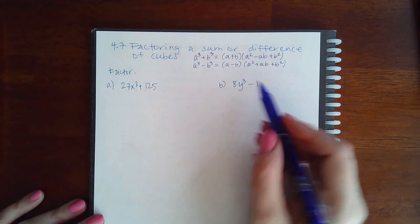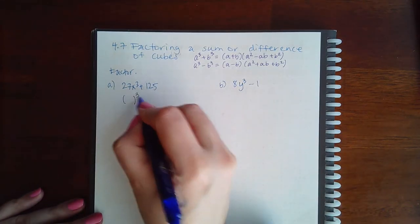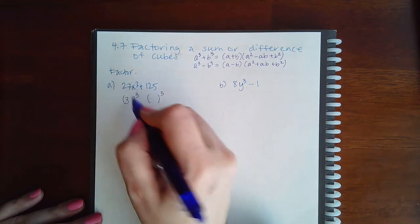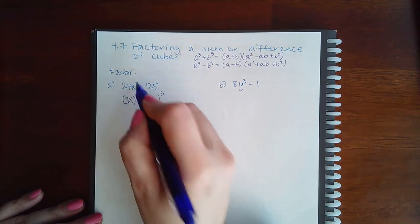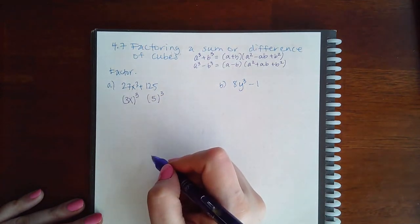So let's go ahead and apply this. So this one has the plus sign. So I need to identify what is being cubed here and what is being cubed here. I know that 3 cubed gives me 27 and x cubed of course gives me x cubed. And here 5 cubed gives me 125.